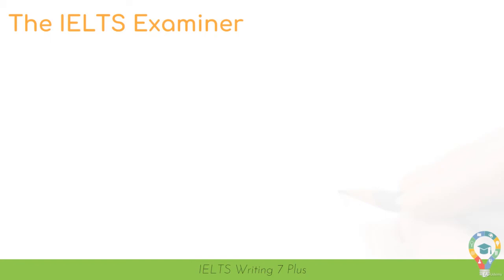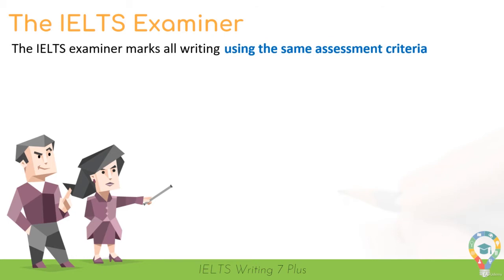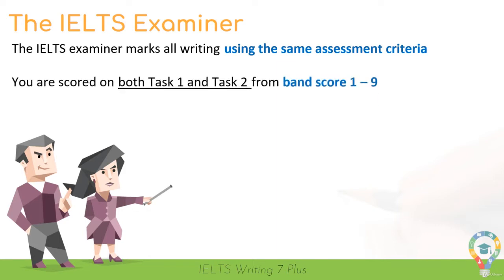Let's jump right in. The IELTS examiner uses the same set of rules and assessment criteria to mark all reports. They're slightly different for task 1 and task 2, but they always use the same guidelines to give a grade to people's writing. These guidelines are called the band descriptors. You are scored on both task 1 and task 2 from band score 1 to 9 — 1 being low, 9 being highest, almost at a native level of writing.